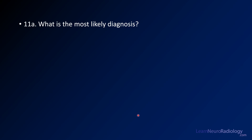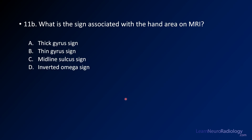Your first question is: what's your most likely diagnosis here? There's not a broad differential for this, although there are a few things included. Second, what is the sign associated with the hand area on MRI? Is it the thick gyrus sign, thin gyrus sign, midline sulcus sign, or inverted omega sign? This is really an anatomy question tucked into a question about pathology.